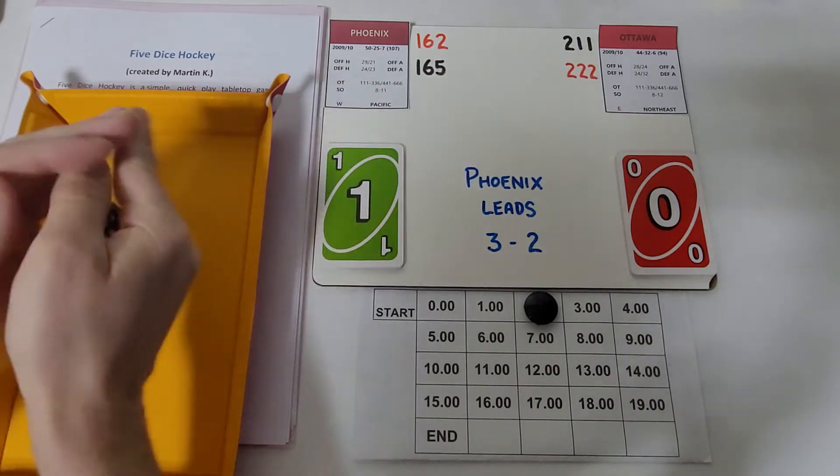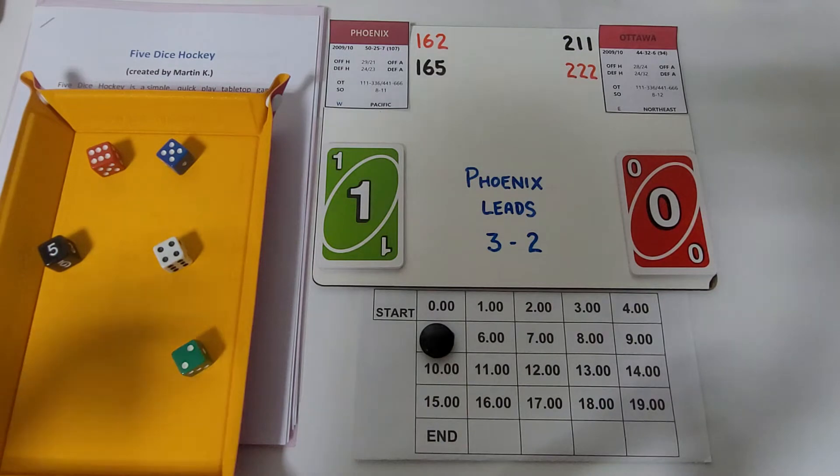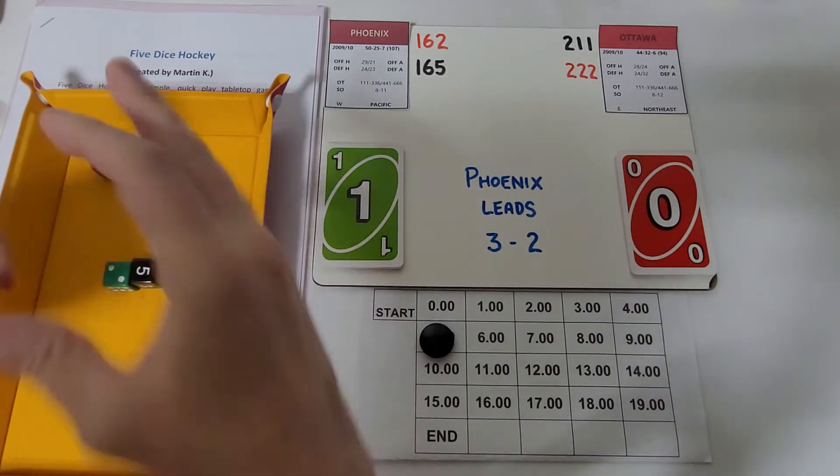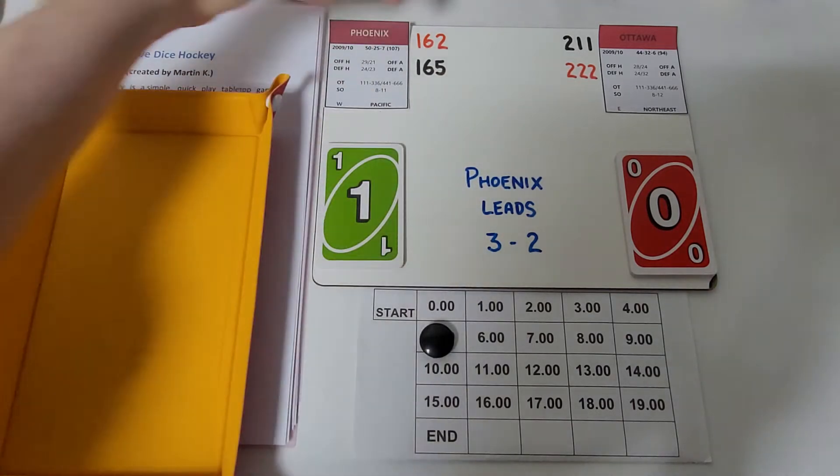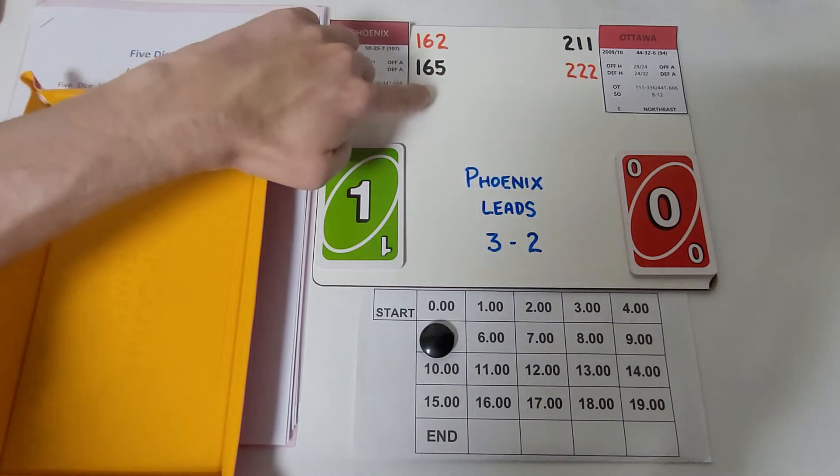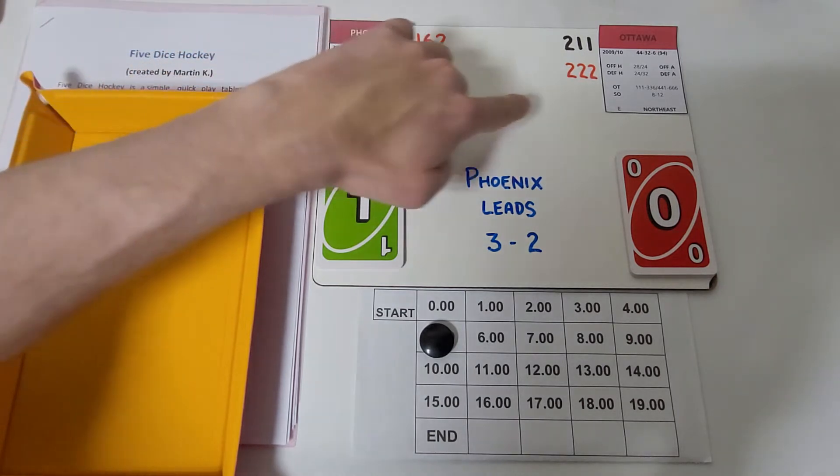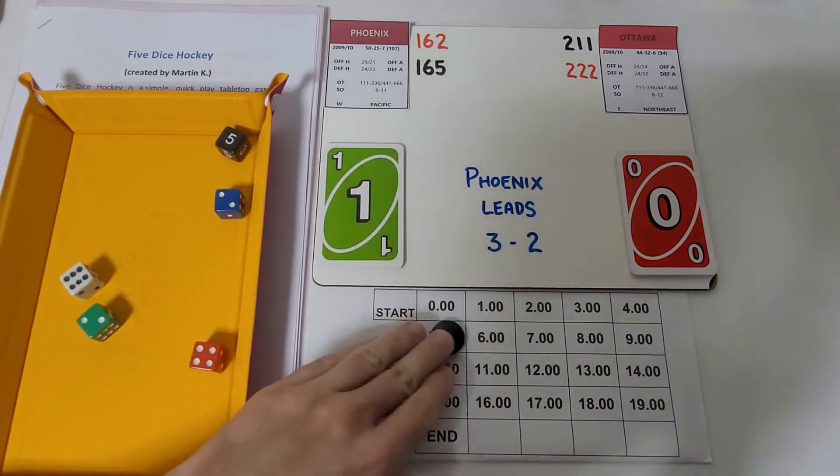Jobing.com Arena is Phoenix's home. It's a one-nothing game for Phoenix. We'll say that Wolski got that goal assisted by Stempniak. Three more coming off the clock, now we're up to minute five.